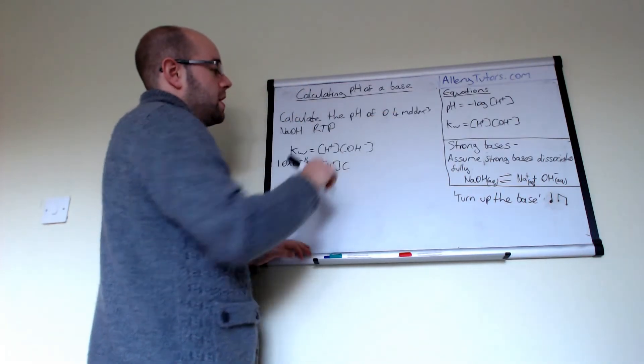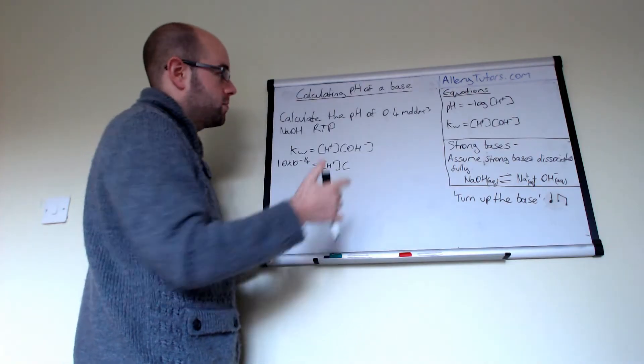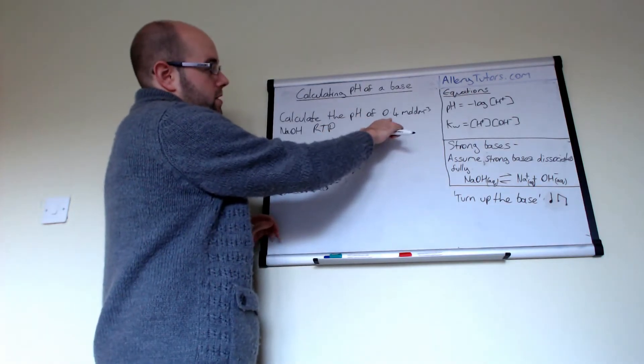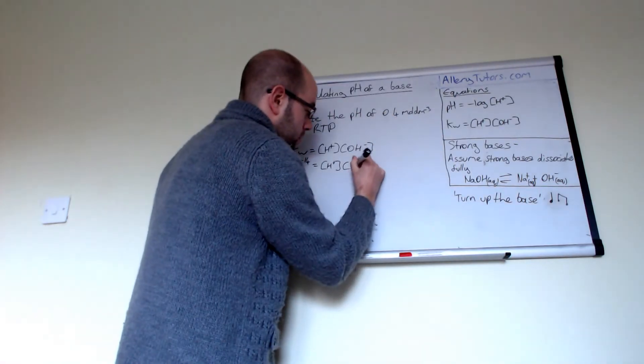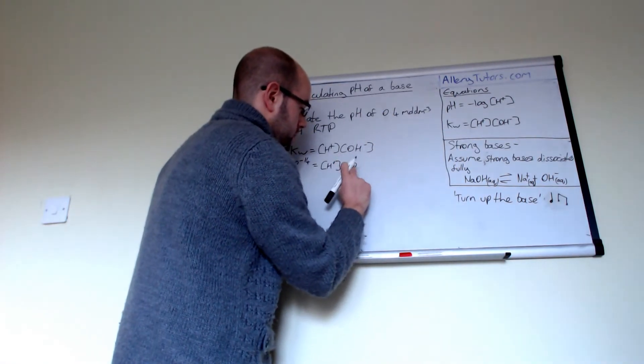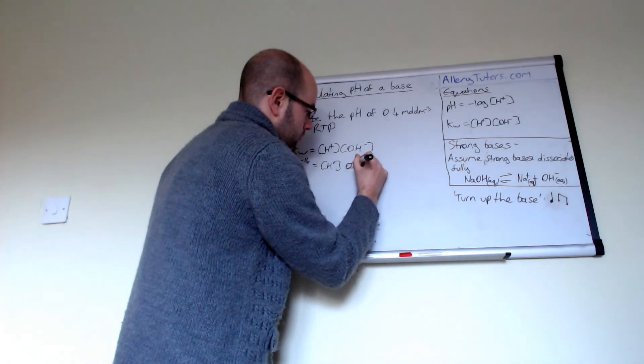And the concentration of OH minus, because we make the assumption that it's a strong base, then we say the concentration of OH minus is also 0.4 moles per dm cubed. So I'm just going to put that in there, 0.4.